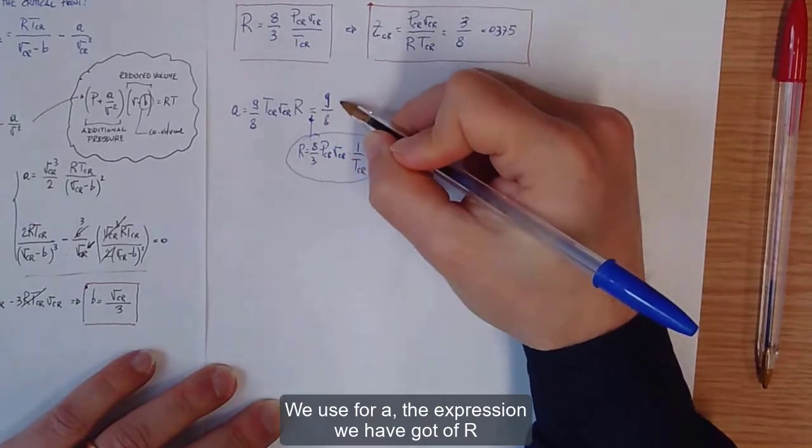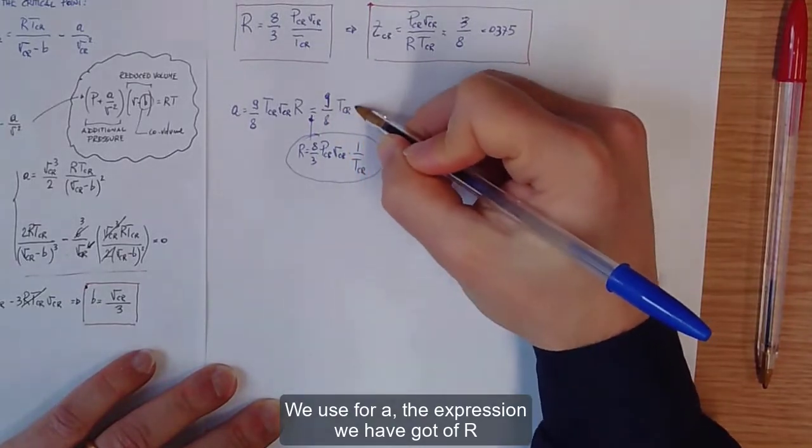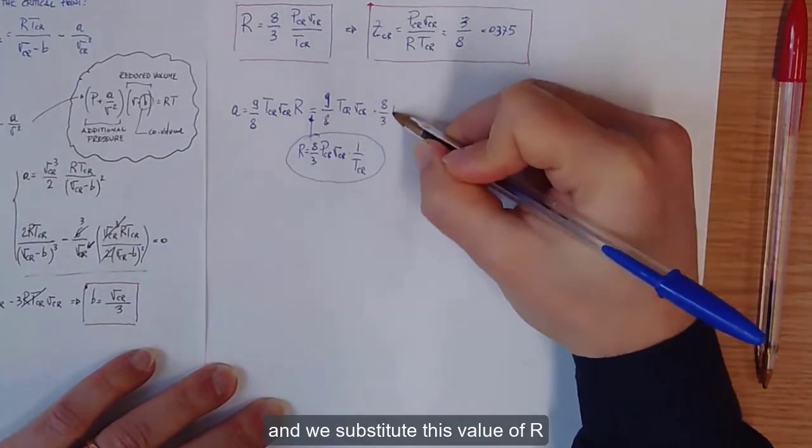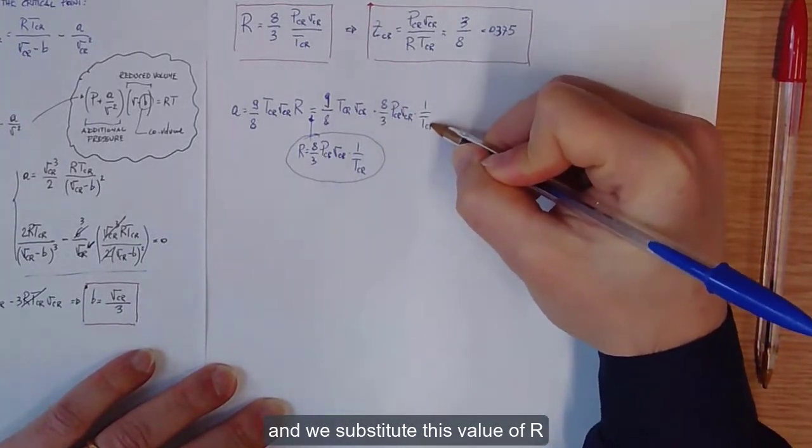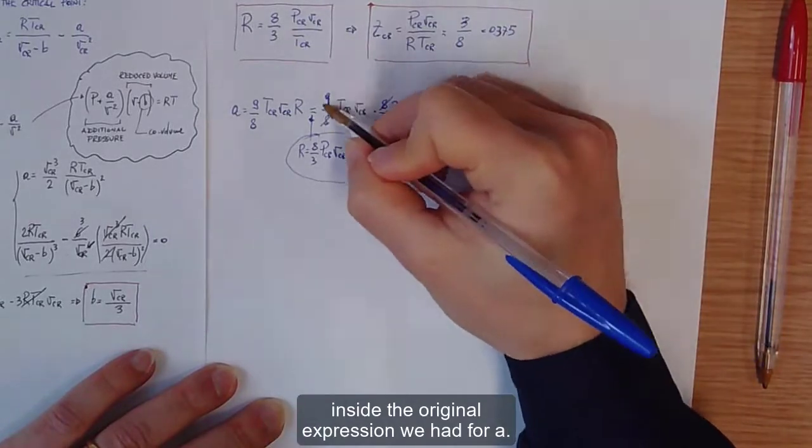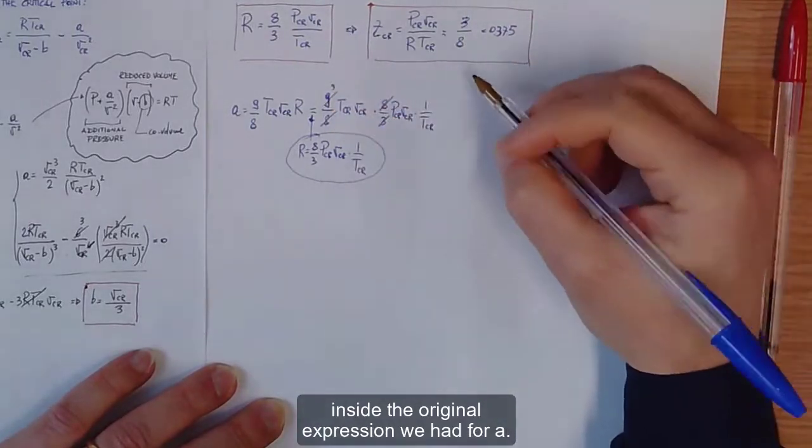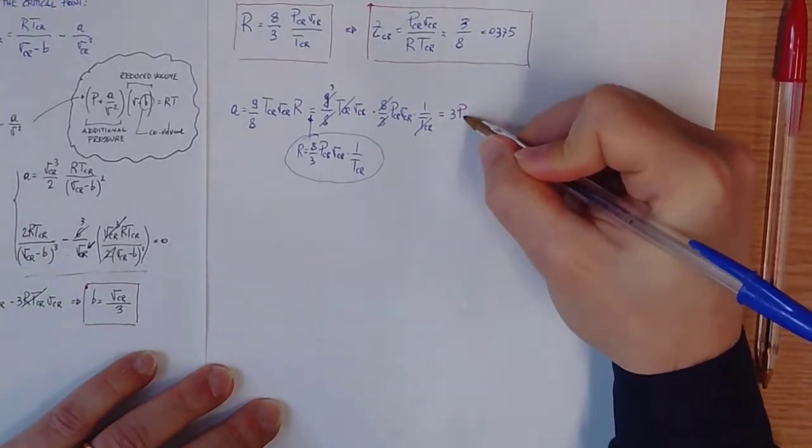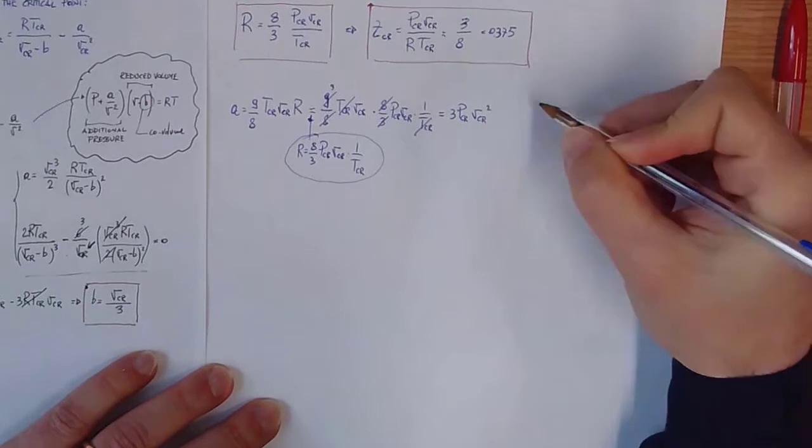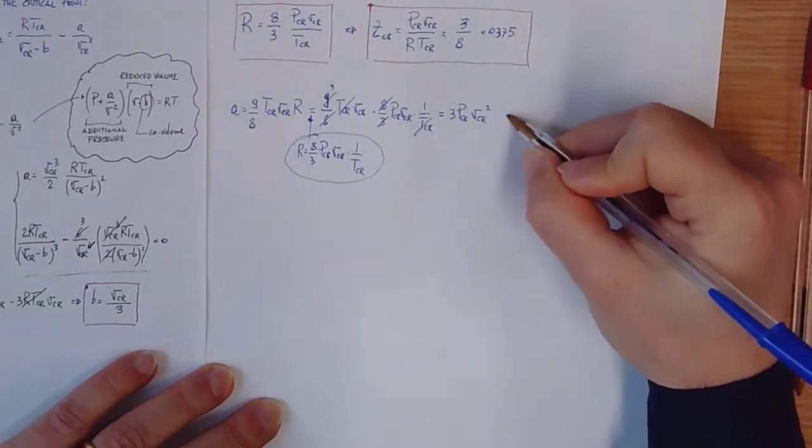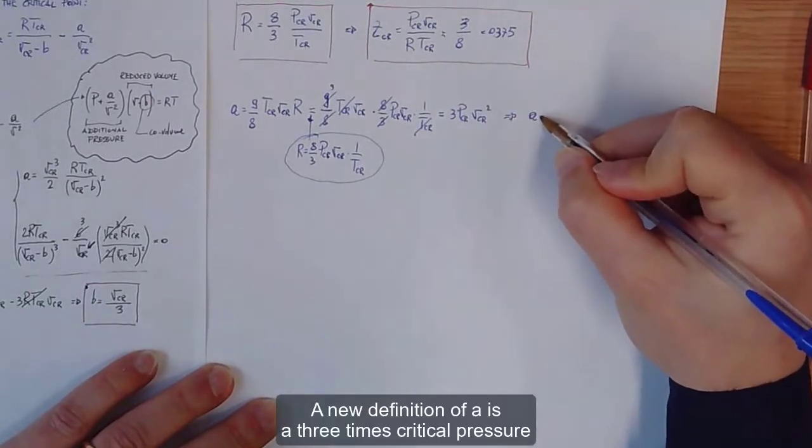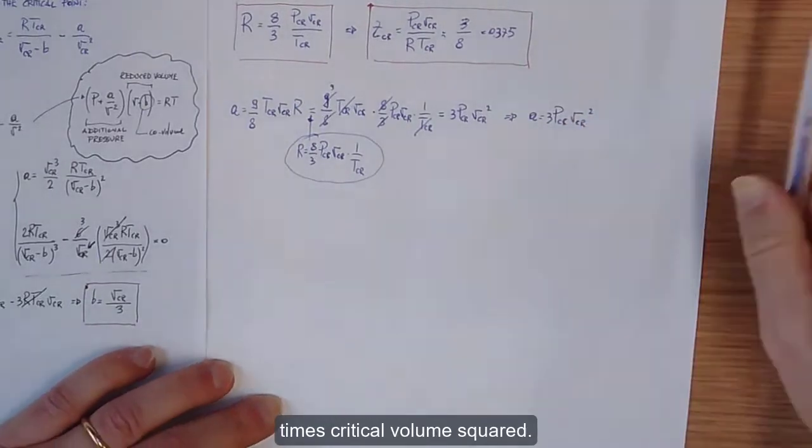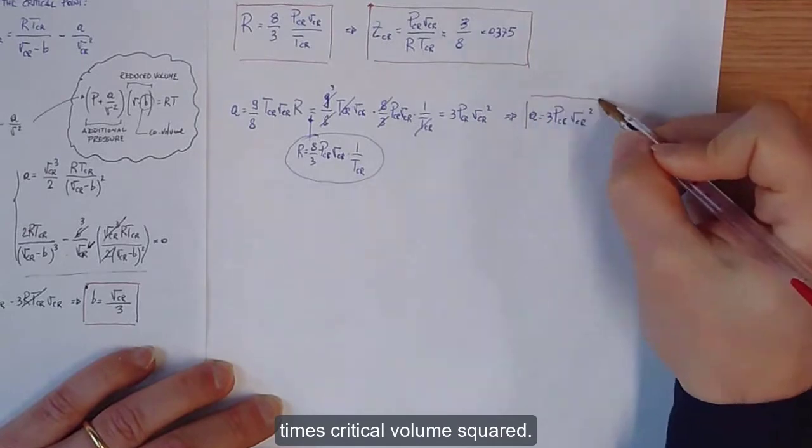We use for a the expression we have got of R, and we substitute this value of R inside the original expression we had for a. A new definition of a is 3 times critical pressure times critical volume squared.